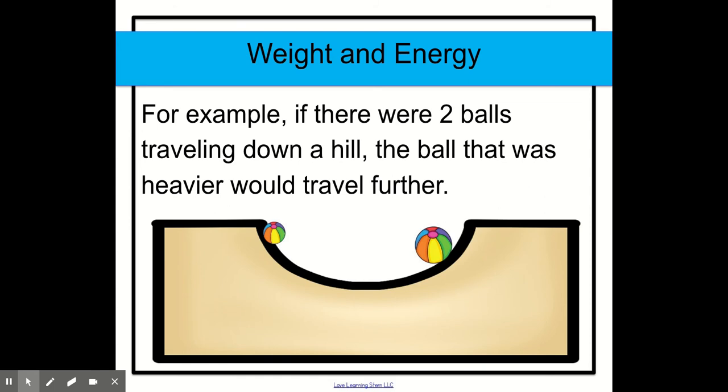Here is an example. If there were two balls traveling down a hill, the ball that was heavier would travel further. This is where the weight of an object will help it travel faster or at a higher speed.